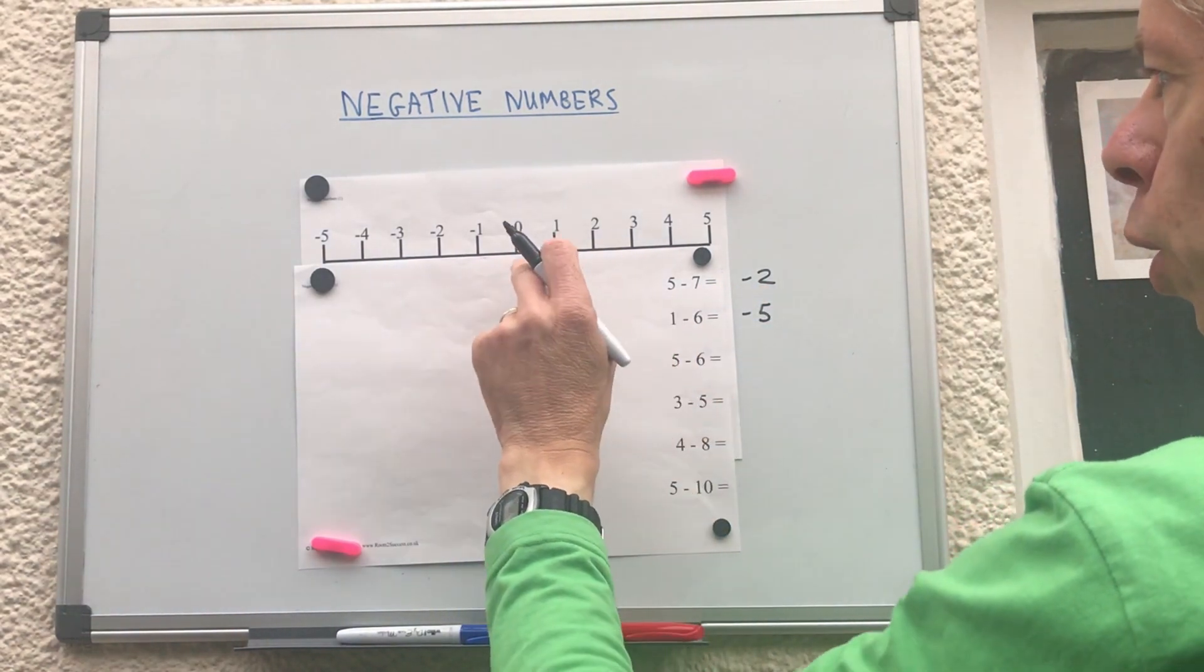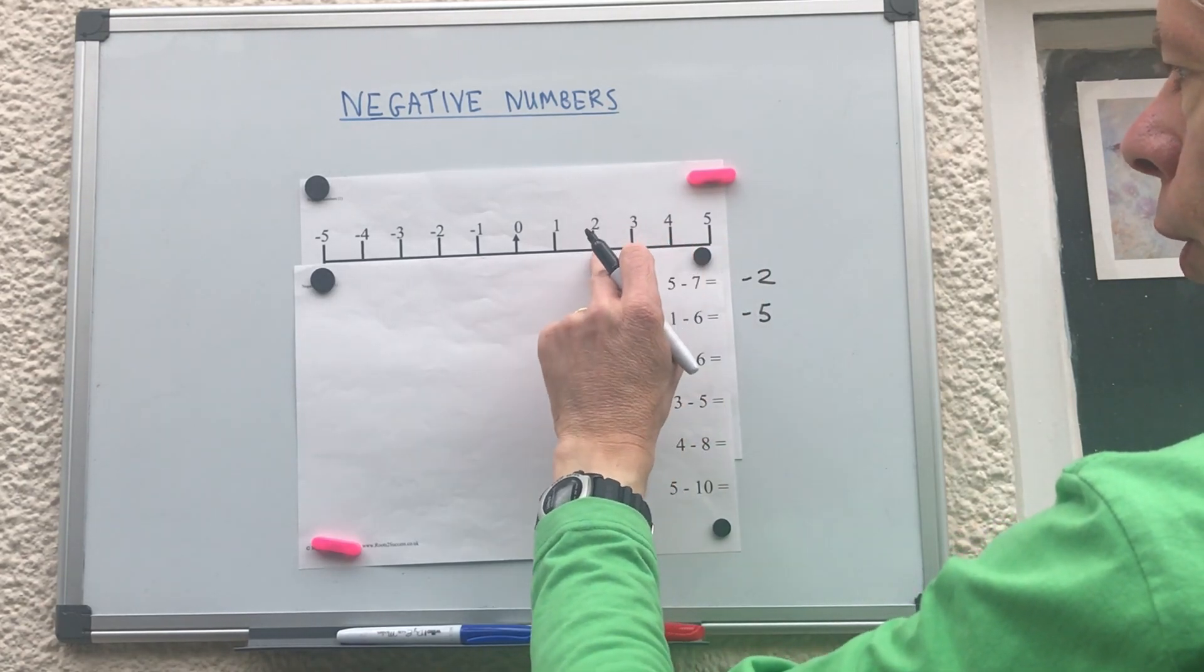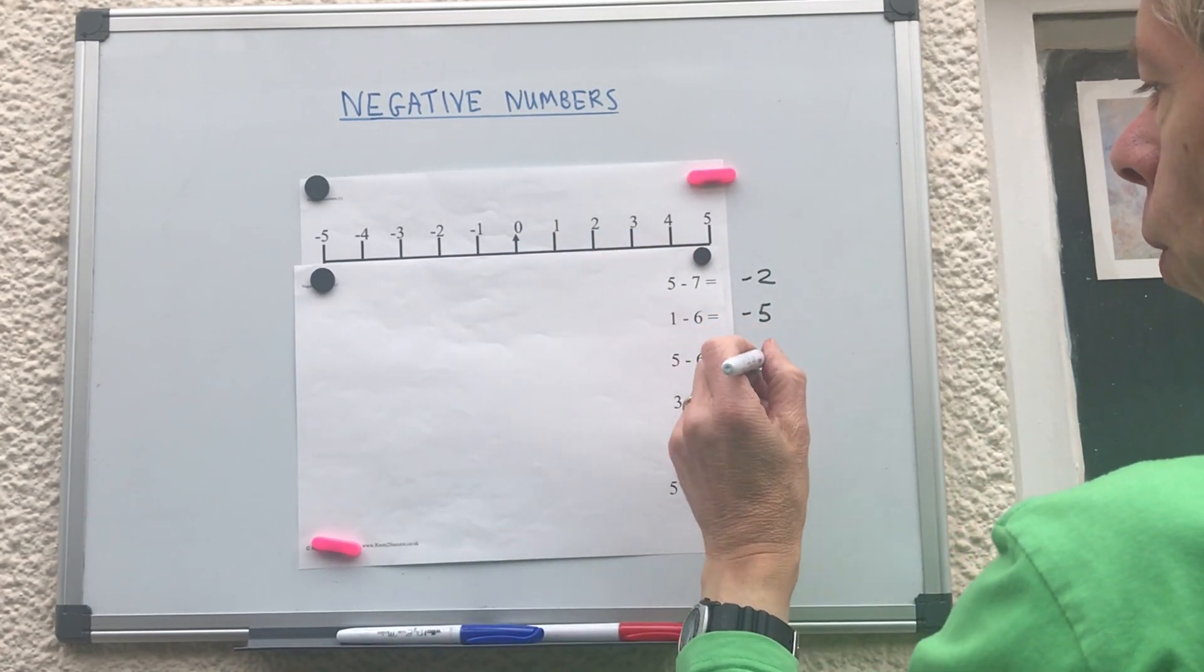Five take away six. So start on five, go back six. One, two, three, four, five, six. We've got minus one.